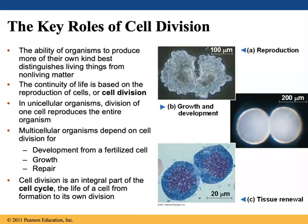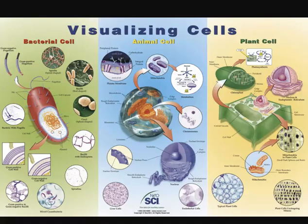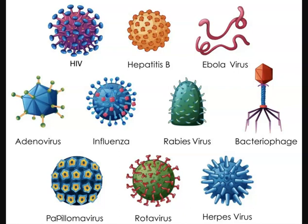Before we get into the specifics of cell division, let's discuss the key roles of cell division. Living organisms have the unique ability to produce more of their own kind, which distinguishes them from nonliving matter. Plant cells, animal cells, bacterial cells, fungi cells, and all other cells have this ability. In contrast, viruses do not carry this ability — they rely on a host cell to reproduce their genetic components and make more viruses. Thus, viruses are not considered living matter.